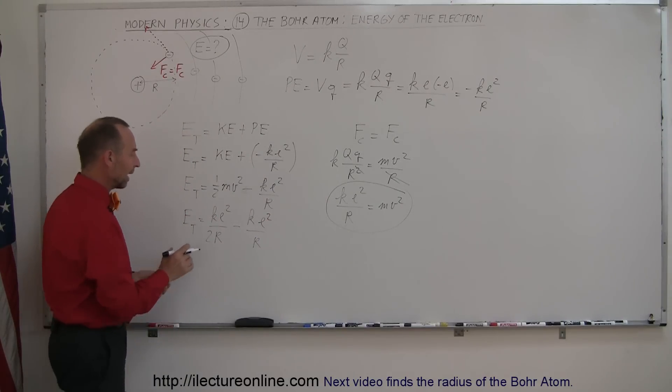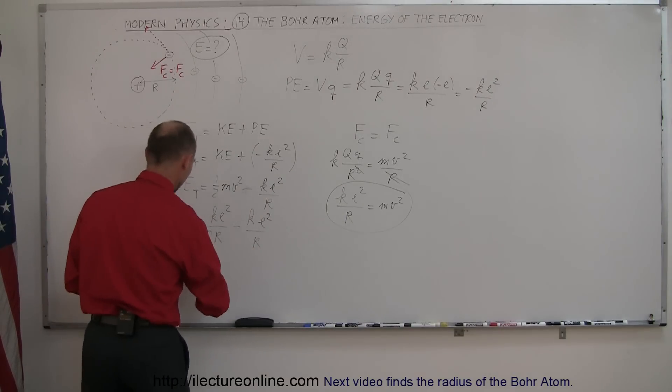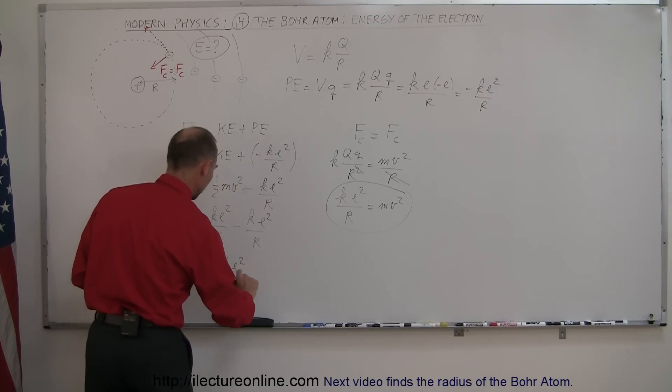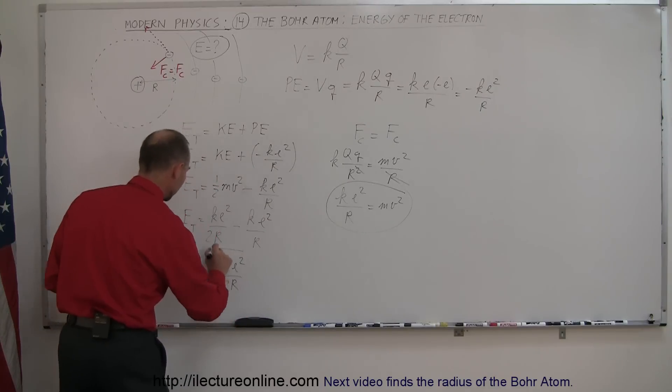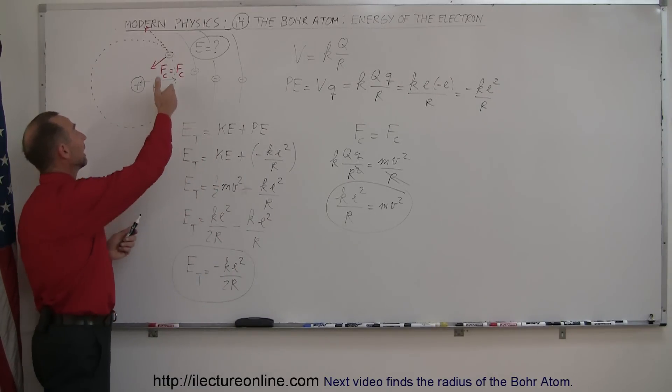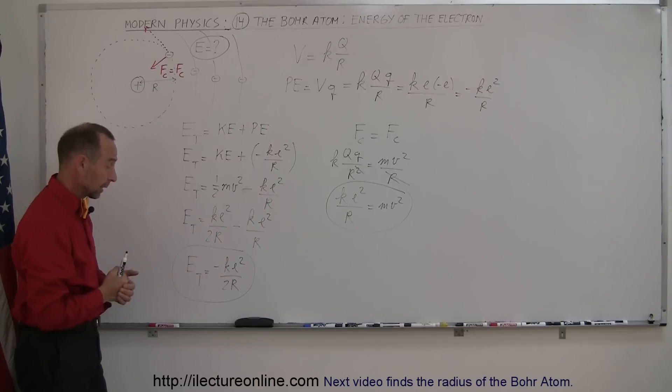Now notice that this is twice as big as that, so E_total becomes equal to minus Ke² over 2R. This will now be defined as the energy of an electron in an orbit around the hydrogen atom.